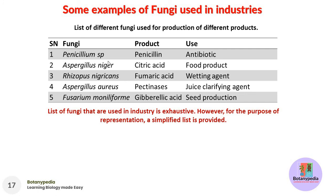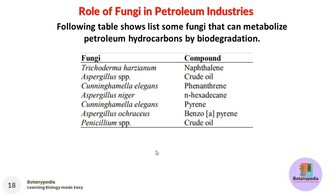Five fungi examples: Penicillium species produces penicillin antibiotic. Aspergillus niger is used for producing citric acid, a food product. Rhizopus nigricans is used for fumaric acid production, used as a batting agent. Aspergillus aureus produces pectinases used for clarifying juices. Fusarium moniliforme is used for production of gibberellic acid, a useful phytohormone in seed production. Additionally, some fungi can metabolize different petroleum hydrocarbons, and specific examples of fungi and the compounds they can metabolize are shown on this slide.